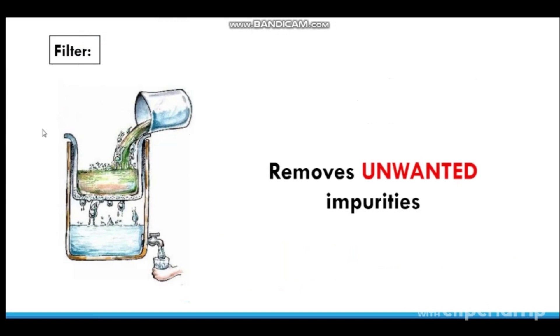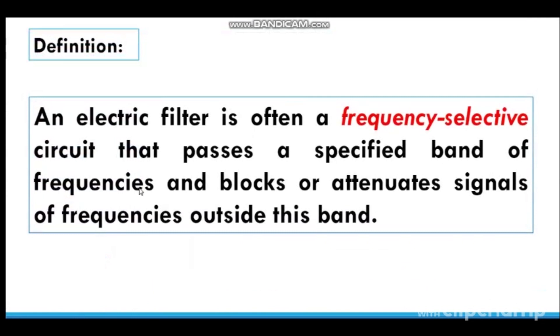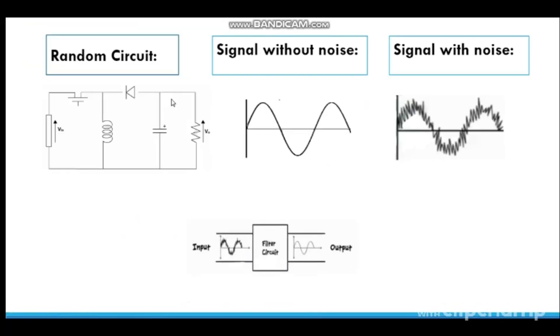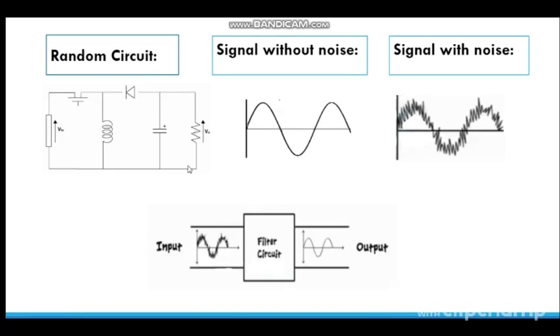We saw an example of water purifier which we use in our everyday life. This purifier removes the unwanted impurities present in the water and gives us pure output. With this example we can understand that the basic function of electric filter is to pass a specific band of frequencies and block frequencies outside this band. Many times random noise gets generated in an electronic circuit due to the presence of components like inductor, diode, capacitor, resistor etc. If this noise is left untreated we will be getting such distorted output. So it is necessary for us to define filter circuit to get a proper output.